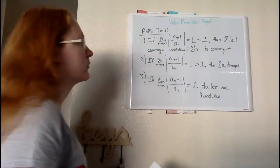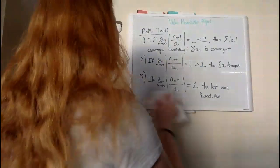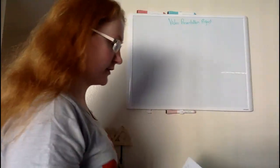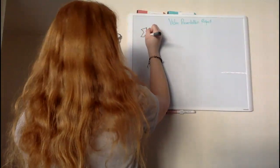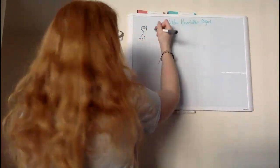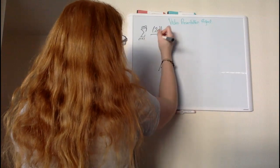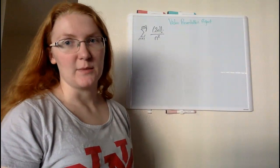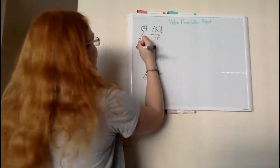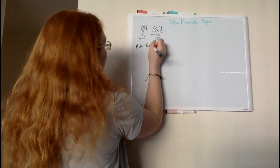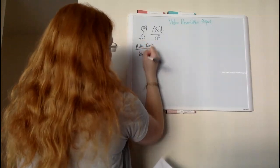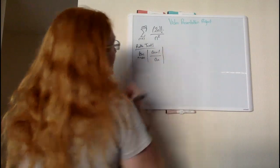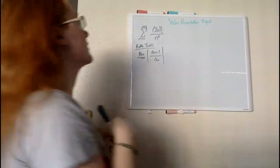Now that we have established the three rules for our ratio test, I have prepared a few examples to go over. The first example is a series of 2n factorial all over n squared. Since we have a factorial right here, the ratio test is going to be our easiest way to find the convergence of this series. As a reminder, the ratio test is the limit as n approaches infinity of our series plus one all over our original series — or rather, you can multiply by the reciprocal instead of stacking them. It's usually easier.